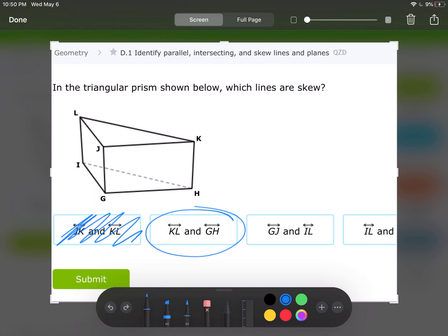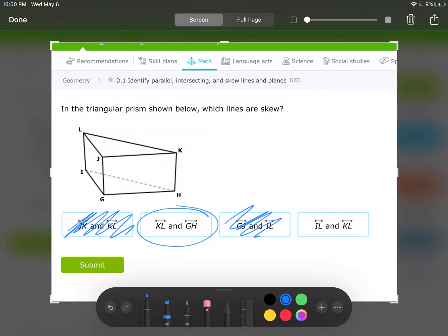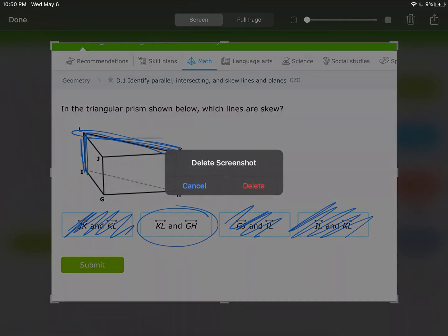In the same plane, those are parallel. IL and KL. So while those are not in the same plane, they are intersecting, which means that those aren't skew. So that's why that one's incorrect as well. So we're left with the second choice.